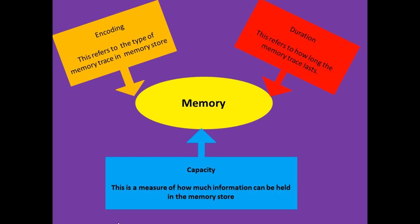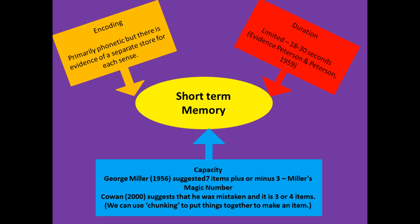When we compare the two memory stores, there are three types of characteristics we usually look at. Encoding refers to the type of memory trace — it could be sound, vision, feeling, or smell. Duration refers to how long the memory trace lasts. Capacity is how much information you can hold in your short-term or long-term memory. Interestingly, difficulties in schooling and academic work are often associated with poor short-term working memory.